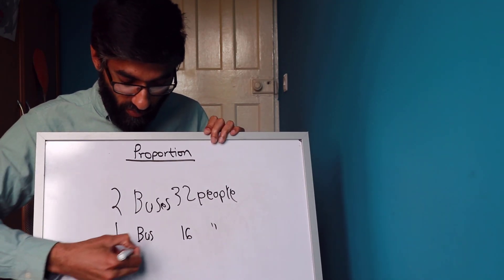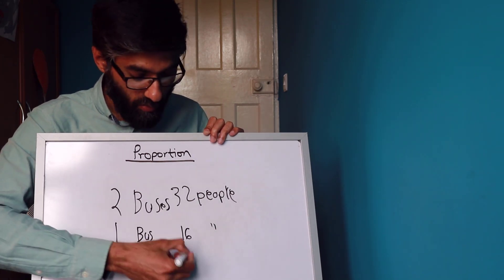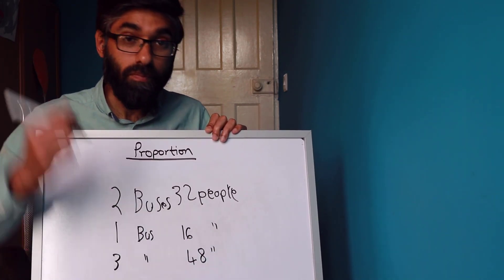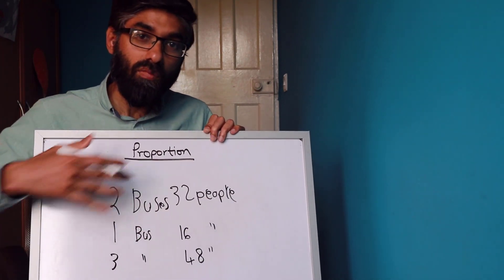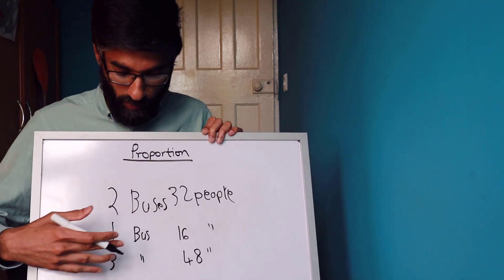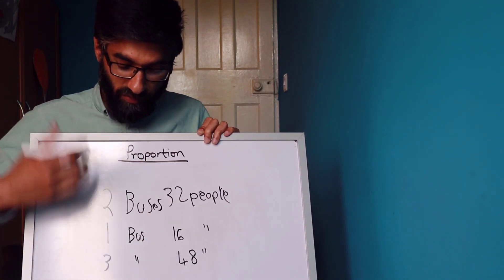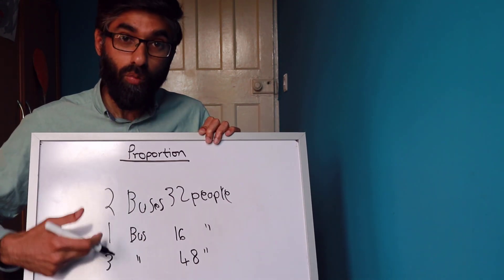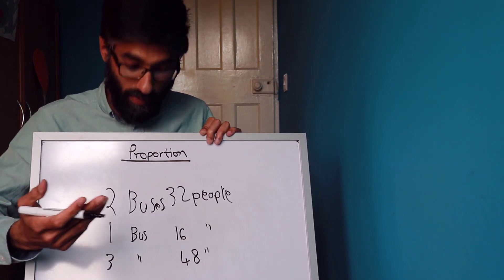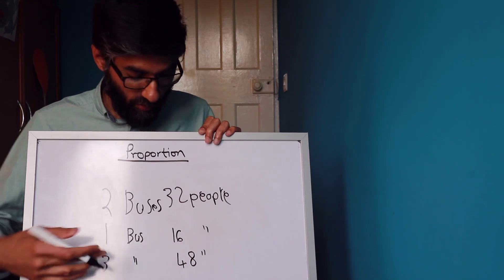Now we can find out three buses: three times 16 is 48 people. This is the basic idea of proportion — work out the value for one, then multiply by the number needed.